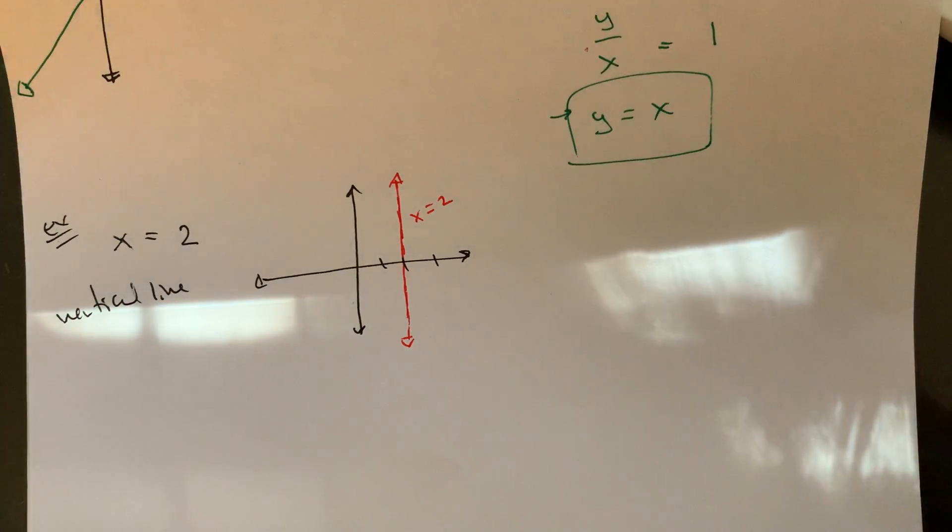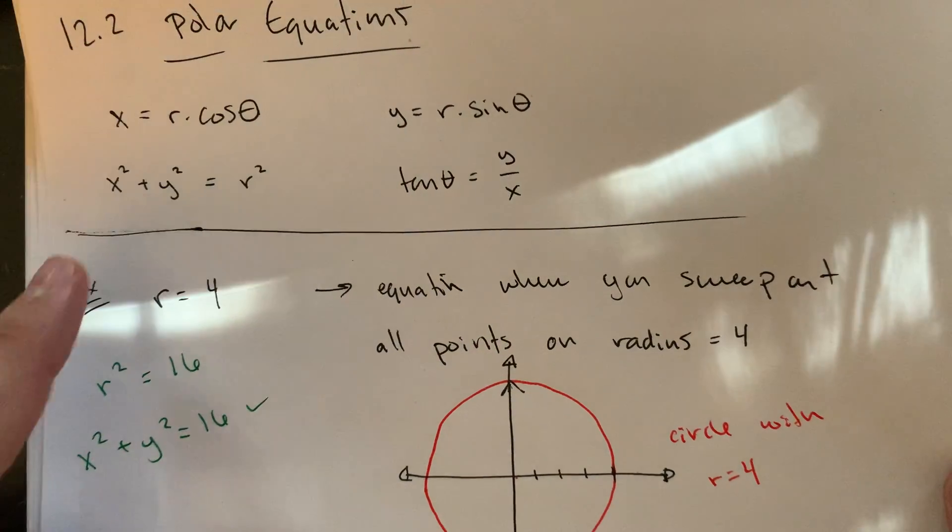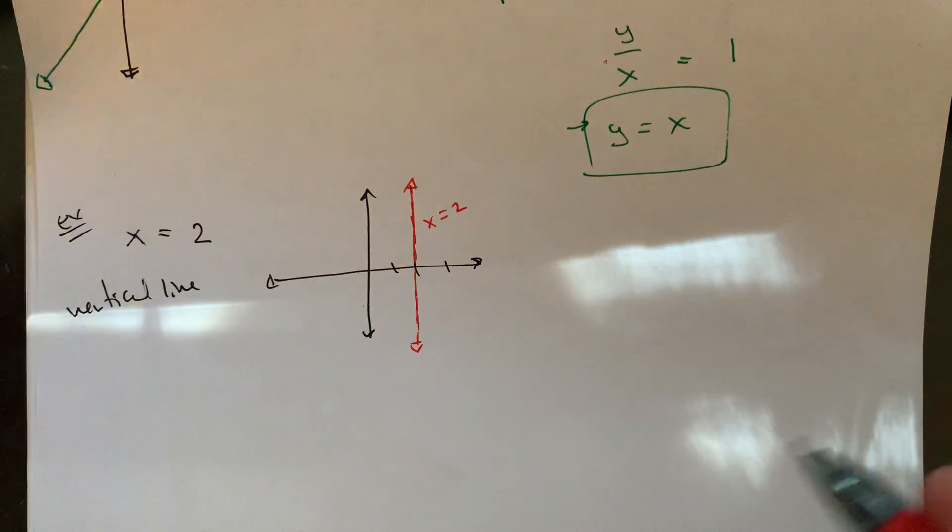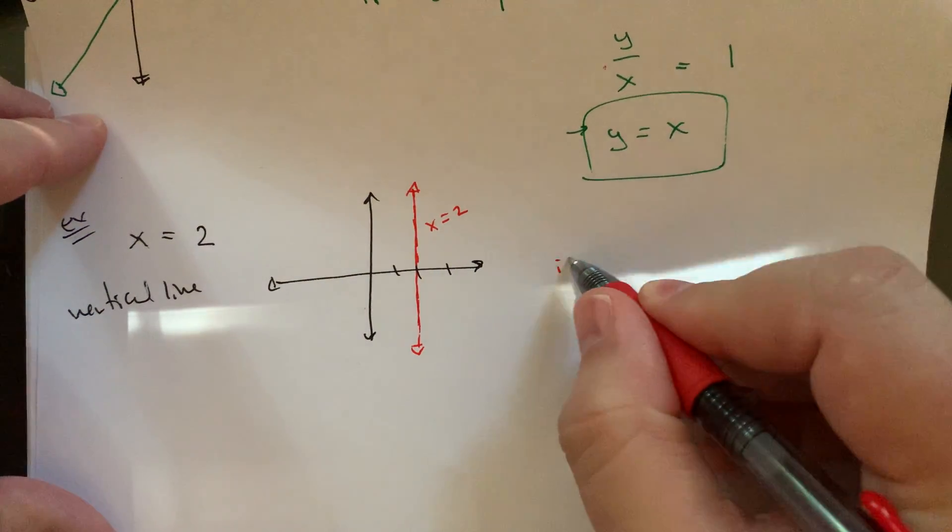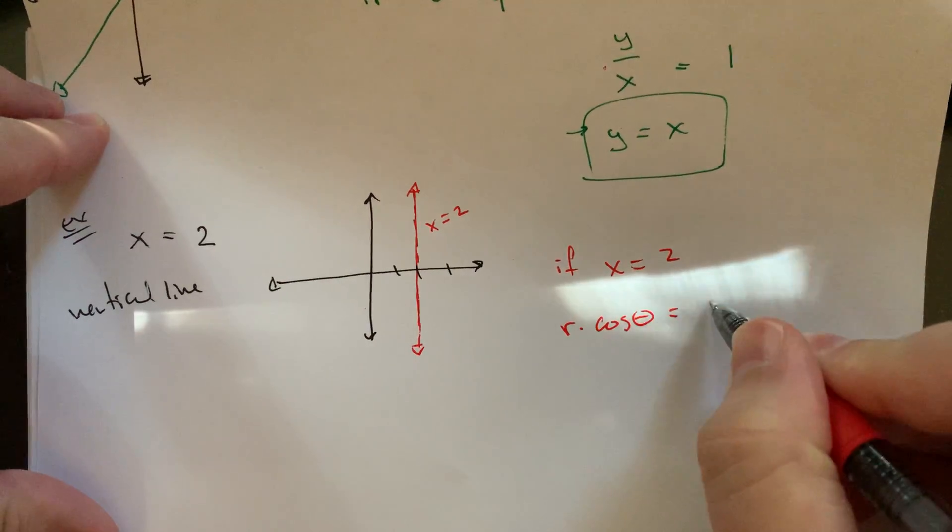And I would say, I know, but what would it look like in polar coordinates? Well, x is the same thing as r times cosine. So your polar version of this, so if x equals two, then that means r times cosine theta is equal to two.